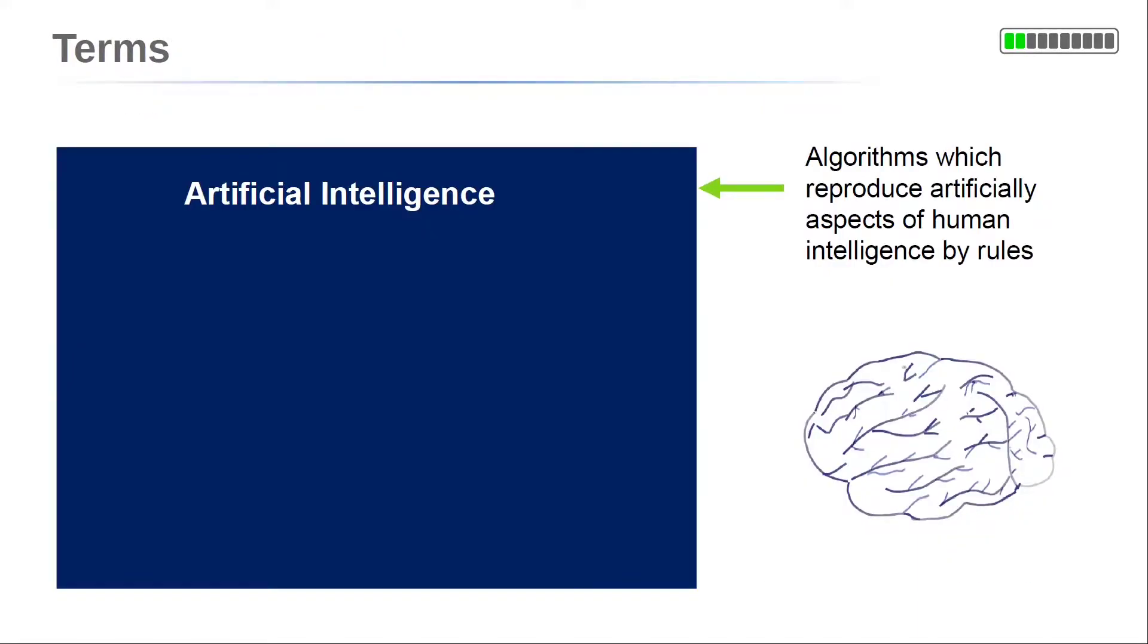So, at first, let us take a look at some of the terms. The term artificial intelligence is currently not clearly defined. This is because we don't really know what intelligence is. In general, when we talk about AI, we mean methods that try to reproduce artificially aspects of human intelligence.